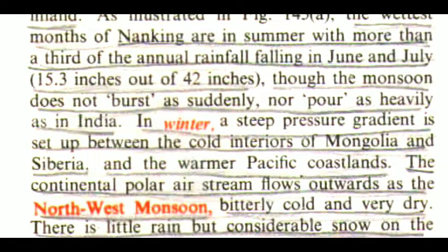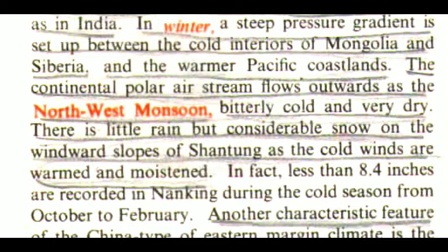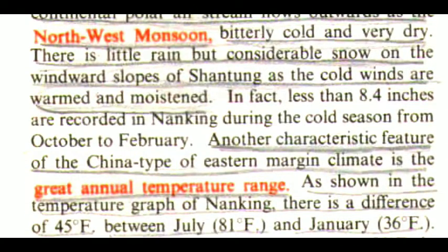Though the monsoon does not burst as suddenly nor pour as heavily as in India, in winter a steep pressure gradient is set up between the cold interiors of Mongolia and Siberia and the warmer Pacific coastlands. The continental polar air stream flows outwards as the northwest monsoon, bitterly cold and very dry. There is little rain but considerable snow on the windward slopes of Shantung as the cold winds are warmed and moistened. In fact, less than 8.4 inches are recorded in Nanking during the cold season from October to February.